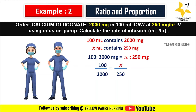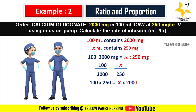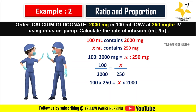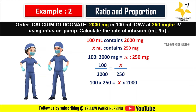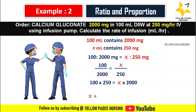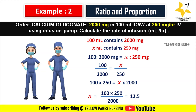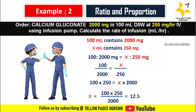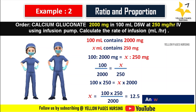Cross multiplying each side we get: 100 multiplied by 250 equals X multiplied by 2000. So X is equal to 100 multiplied by 250 divided by 2000, which gives 12.5. And hence we set 12.5 ml per hour in the infusion pump.